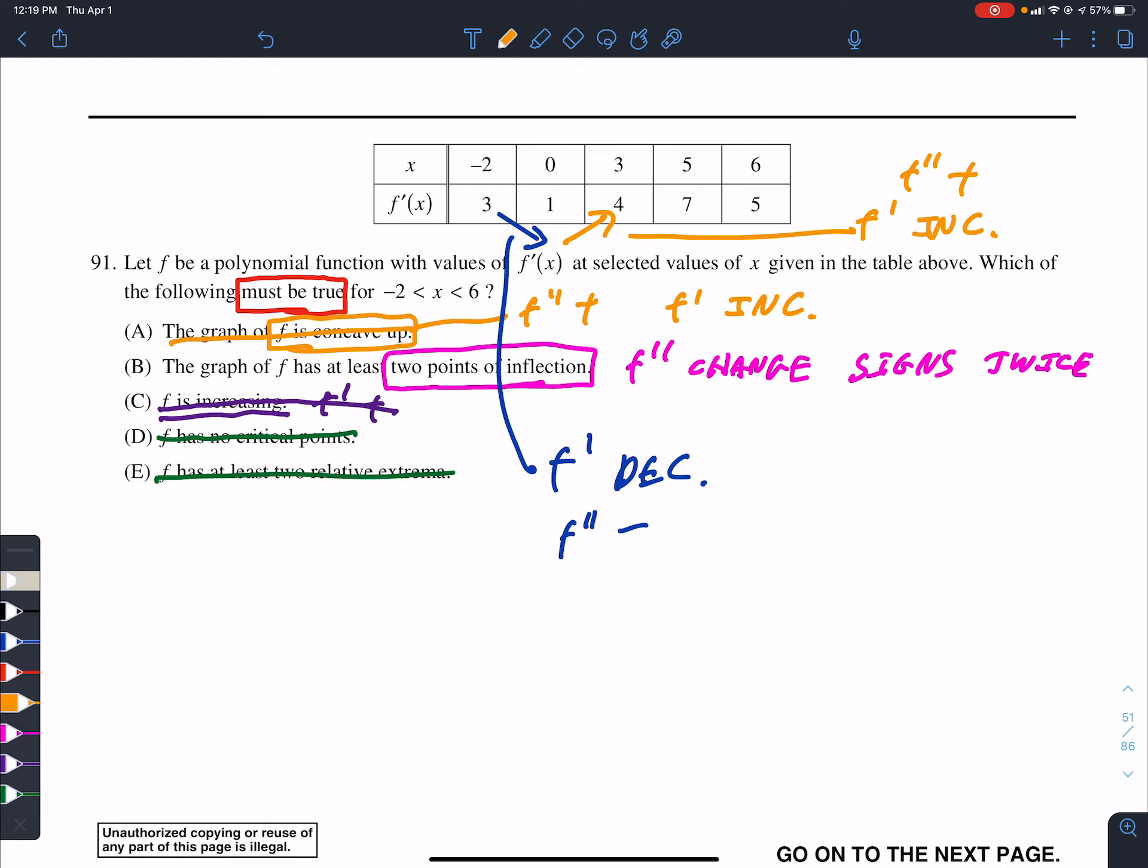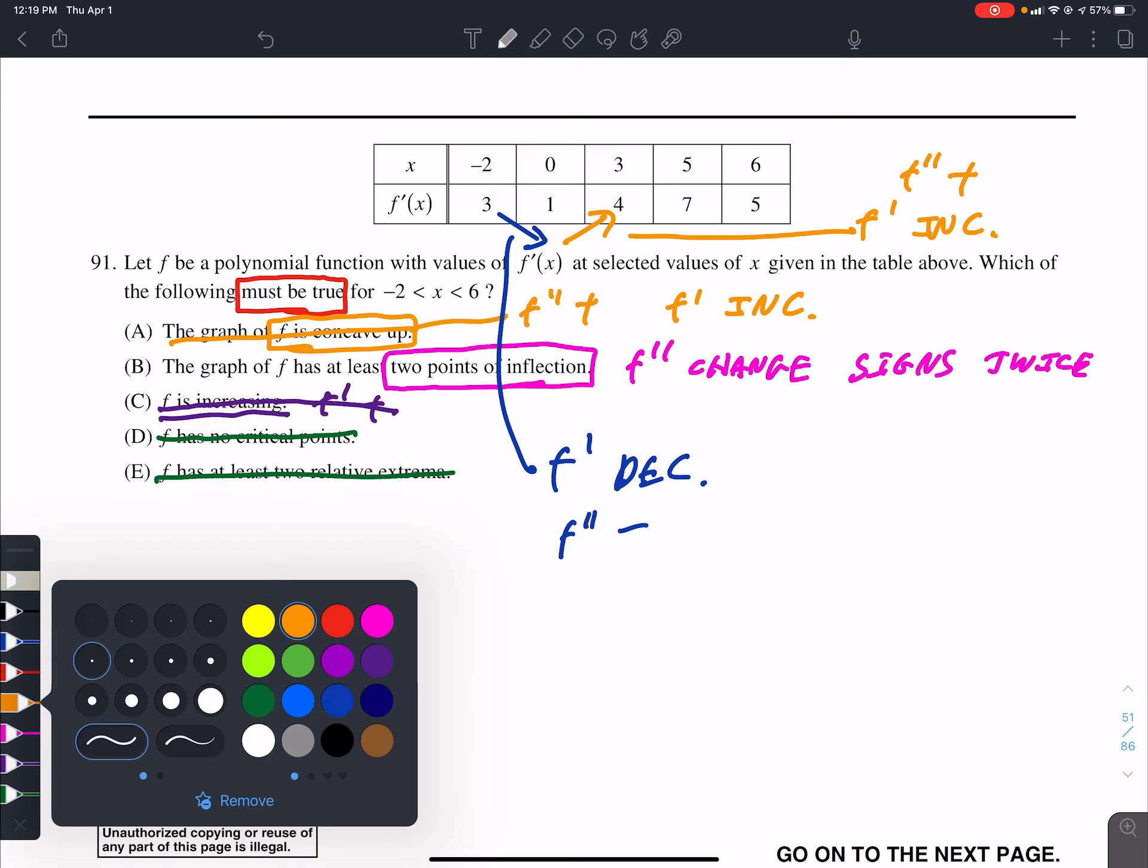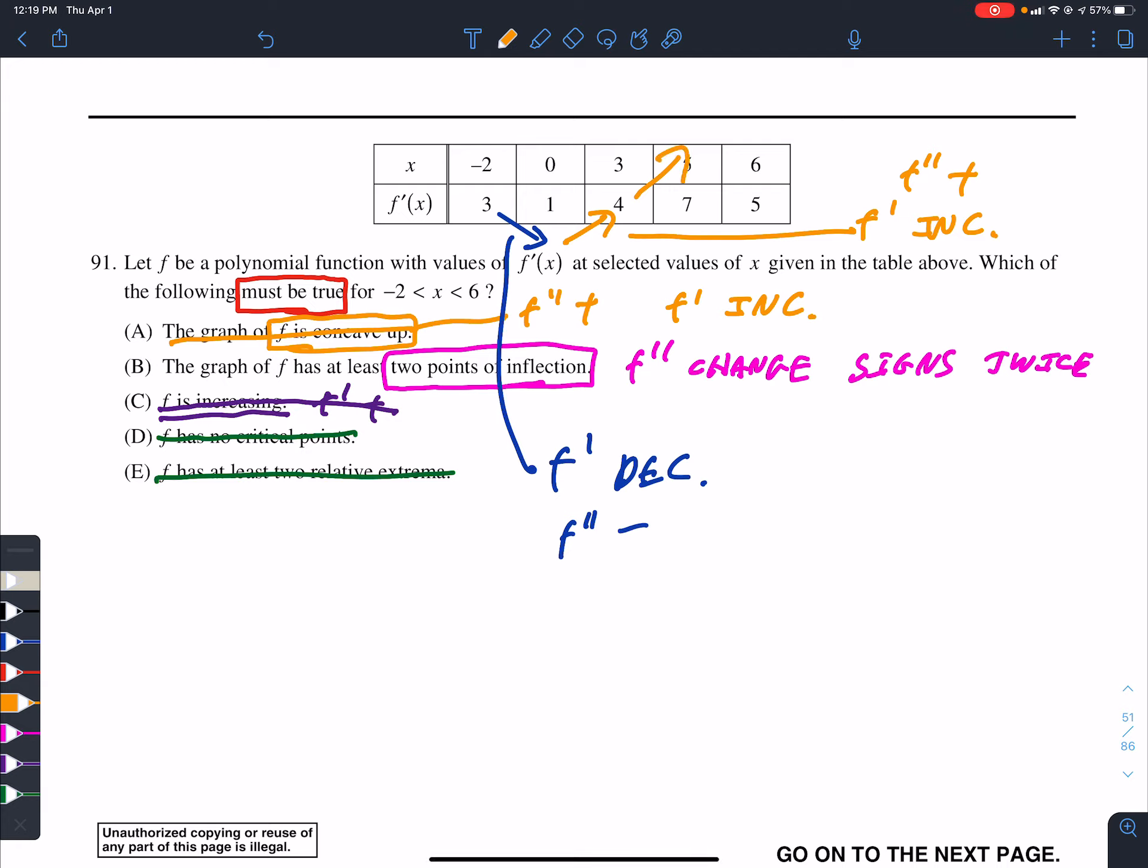And then, once again, here, from 4 to 7, f prime, at some point between there, has to be increasing. Right? Therefore, the second derivative must be positive. But check this out. If the derivative goes from 7 to 5, right? I don't know. It might go up and down a few times, but I know at some point f prime must be decreasing, meaning at some point the second derivative must be negative. Okay? And so, at some point, the second derivative must be negative. At some point, the second derivative must be positive. It had to change signs in between. Therefore, there had to be at least a point of inflection there.